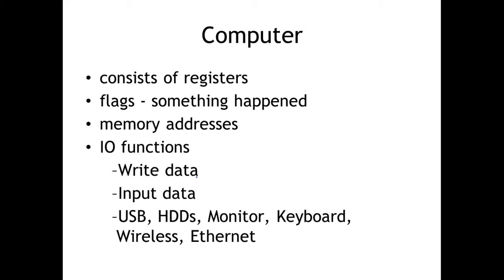The registers are little chunks of memory available while the CPU is executing those instructions — to store data, to put the operands, to store results as it's executing and figuring out what instruction to execute next. We also have a register for flags — through a one and a zero, either something happened or it didn't. Flags allow us to see when certain things happen, when certain events happen when an instruction is executed — was there a carry, was there an overflow.